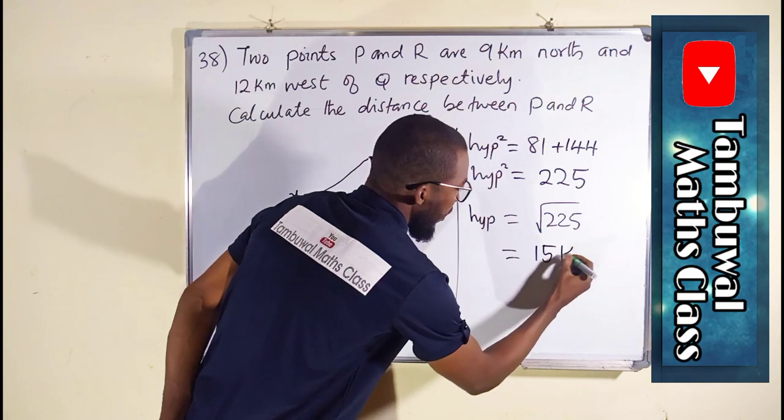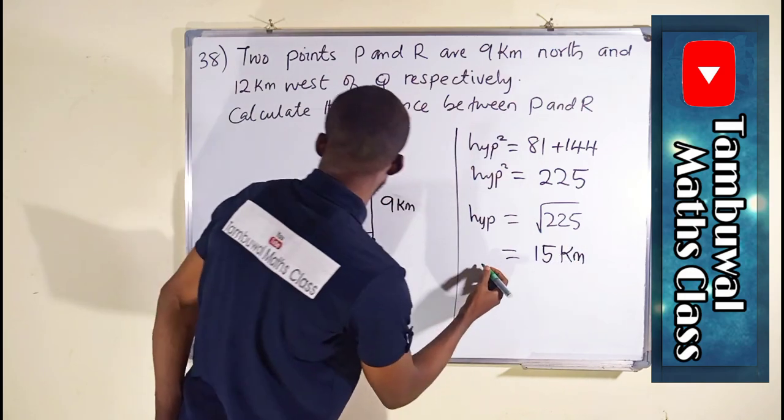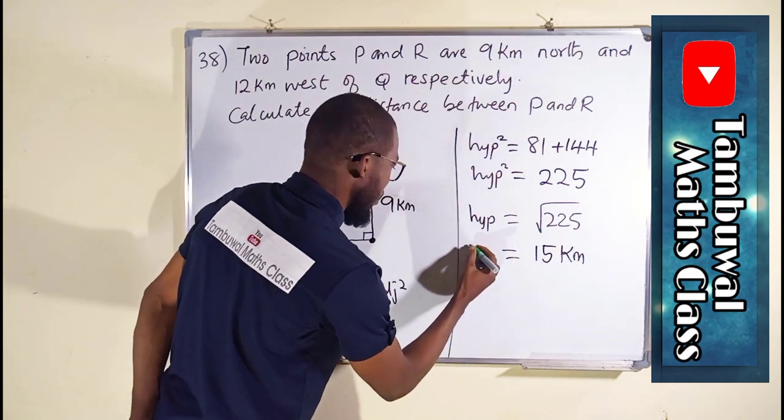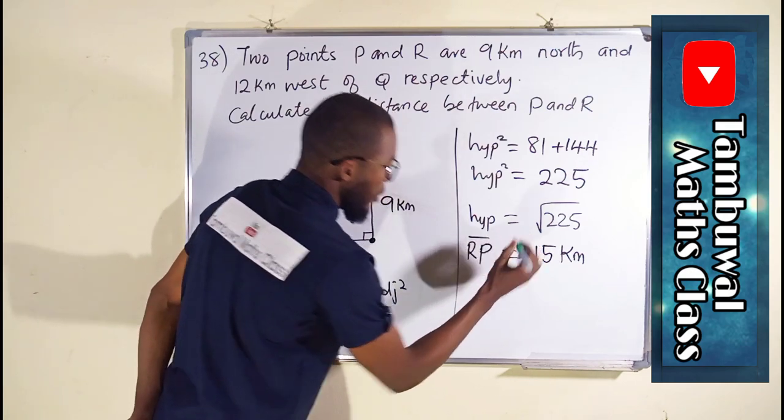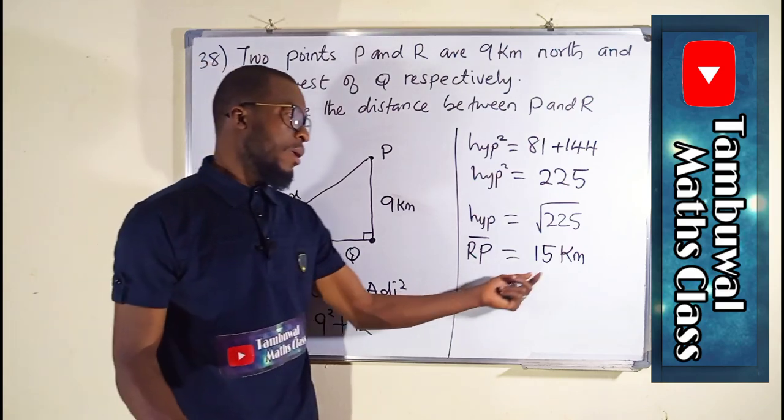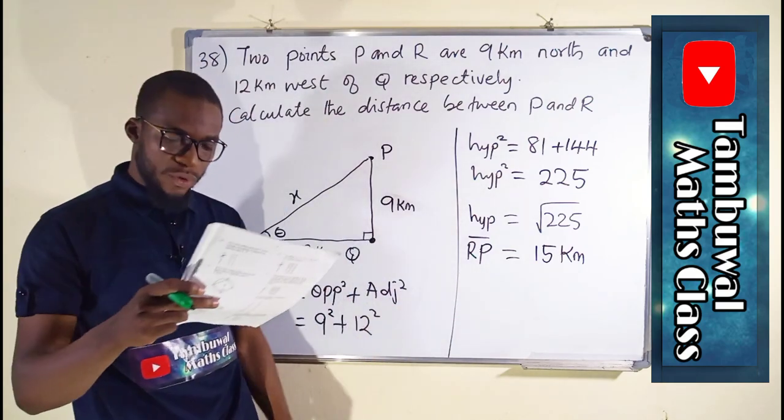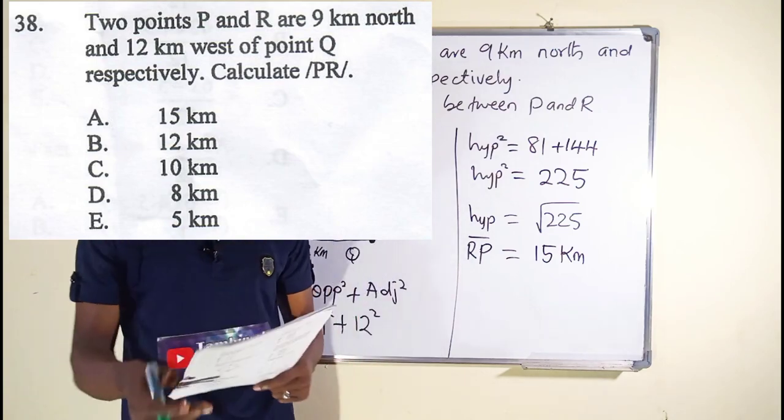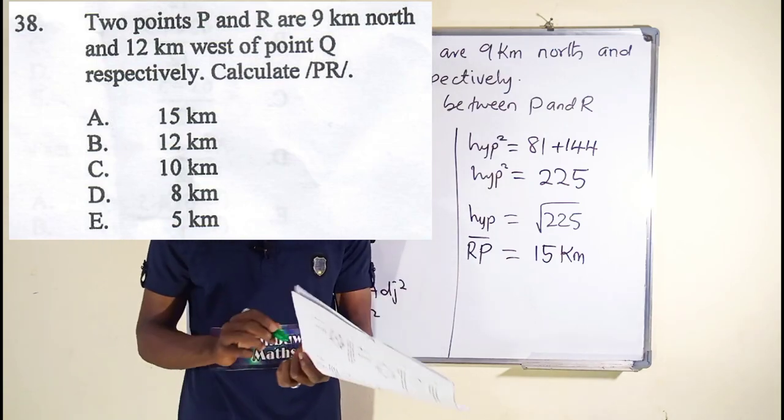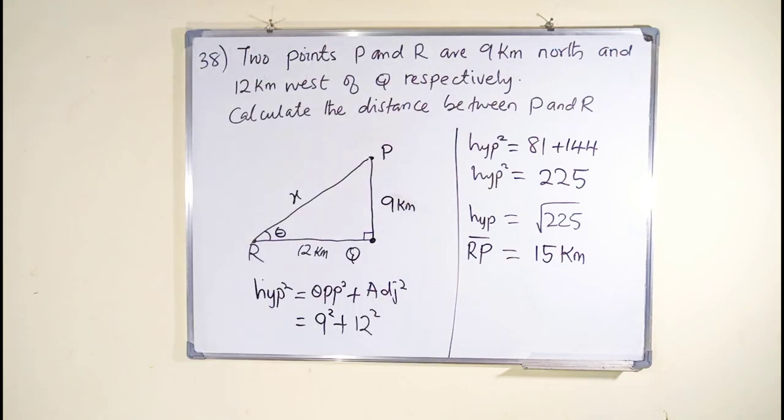Remember, we are in kilometers. And this is RP. This is the distance between R and P, 15 kilometers, which we have here as option A. Now let us move on to question number 39.